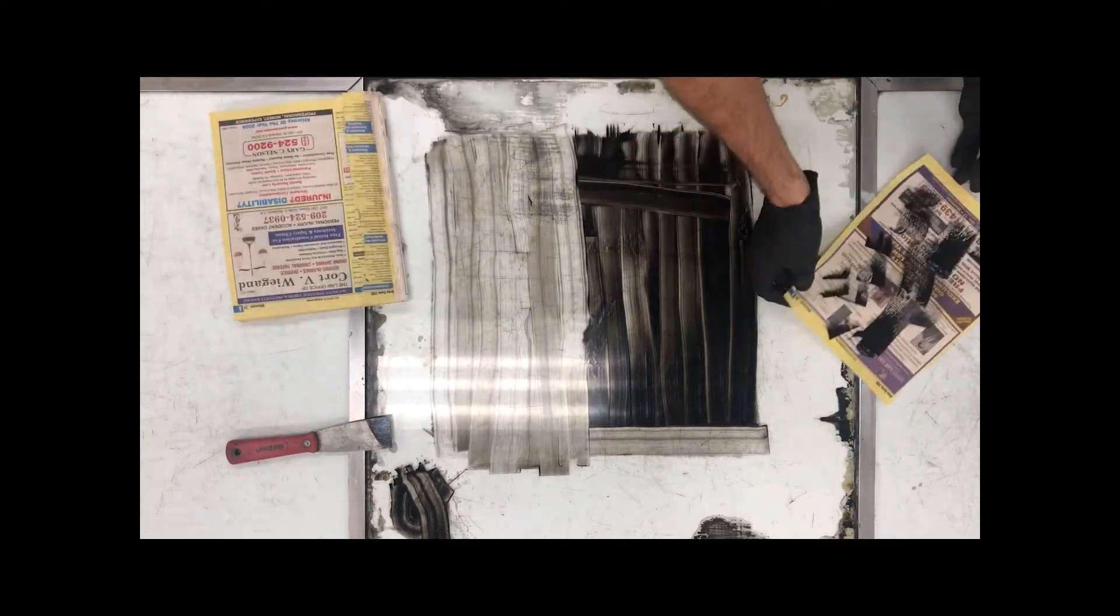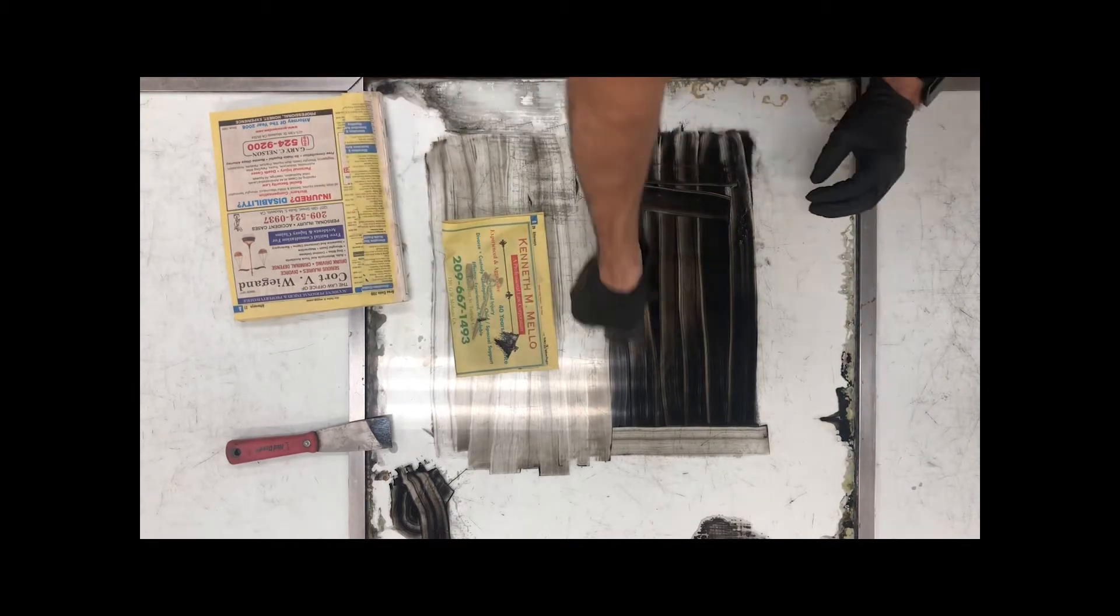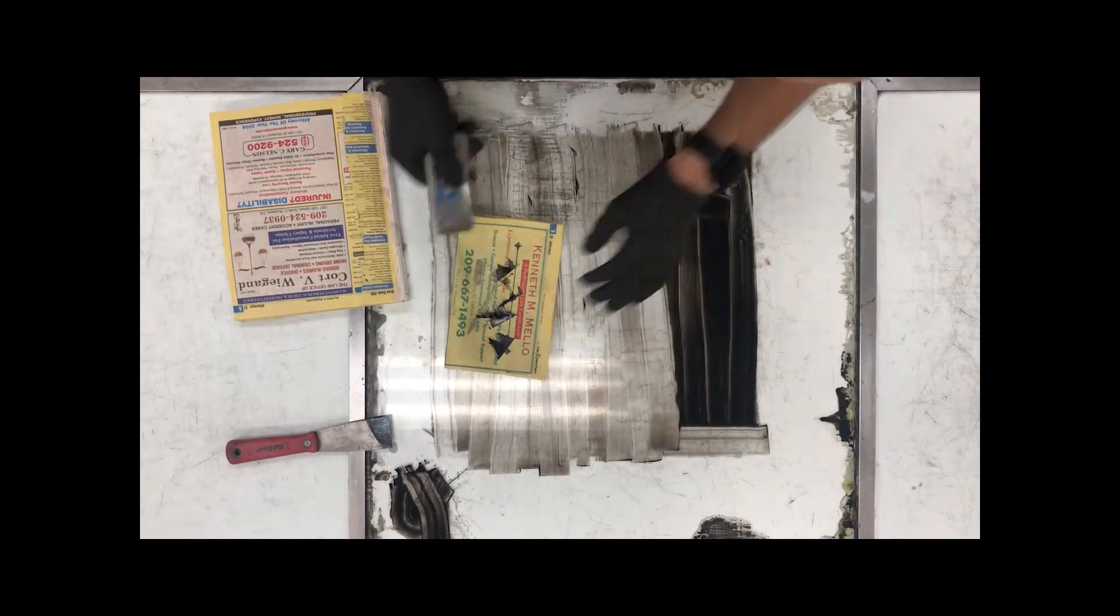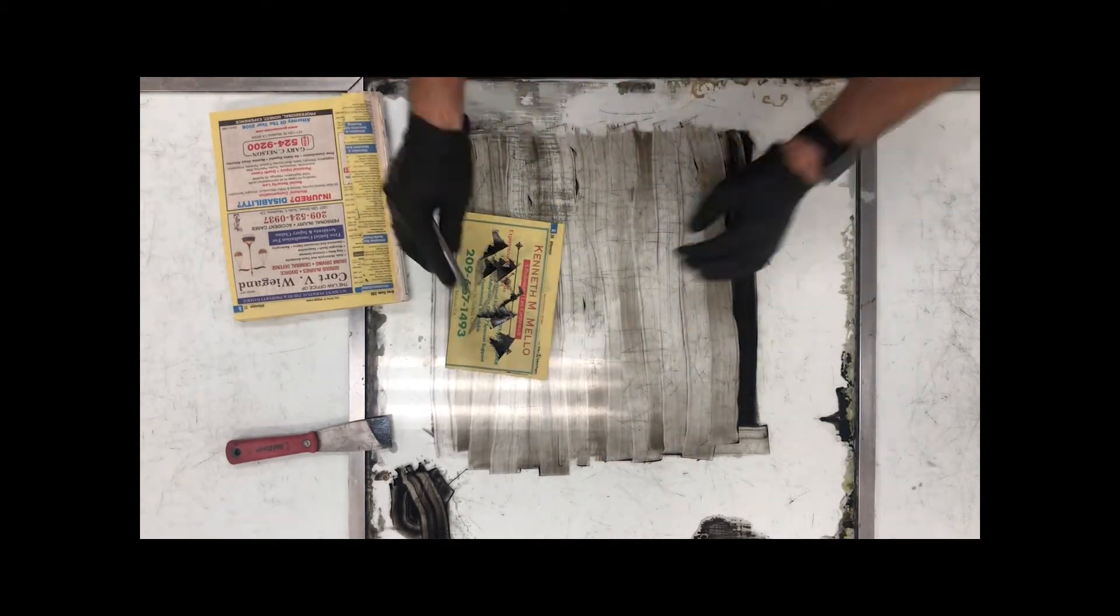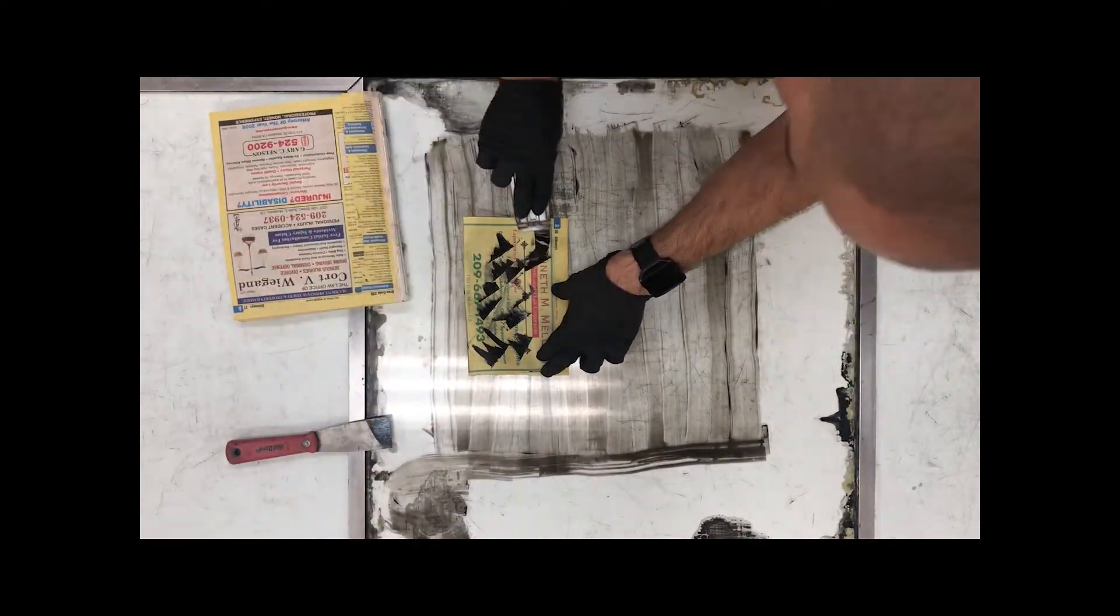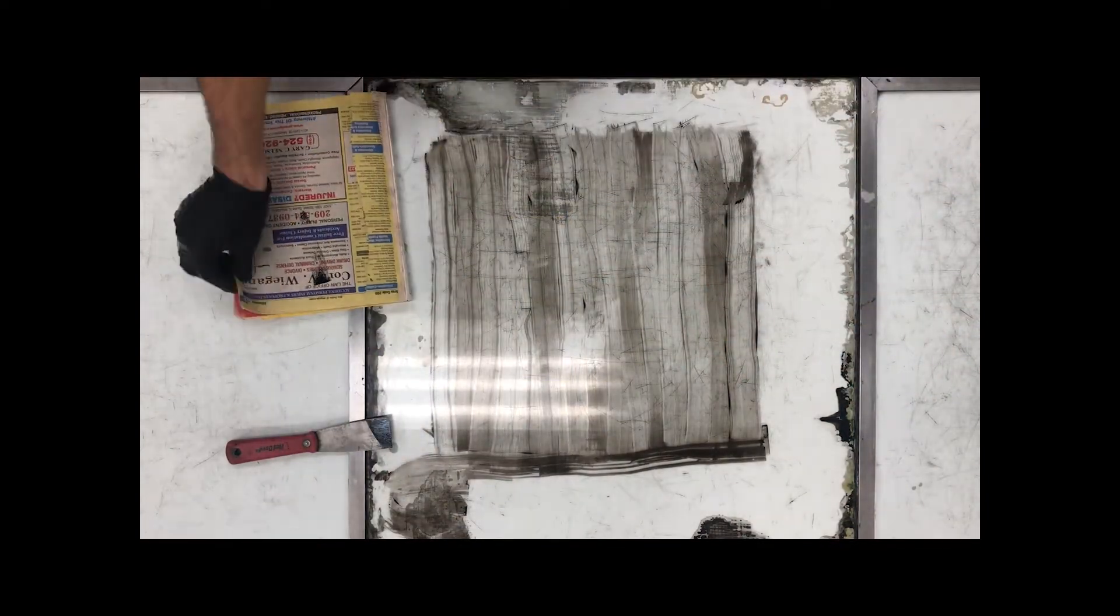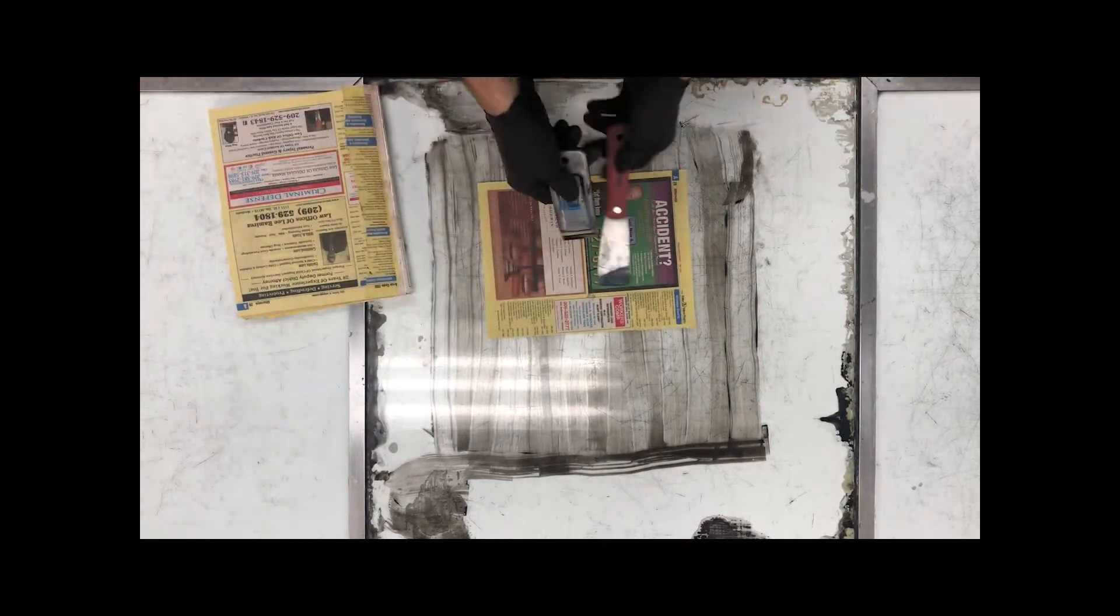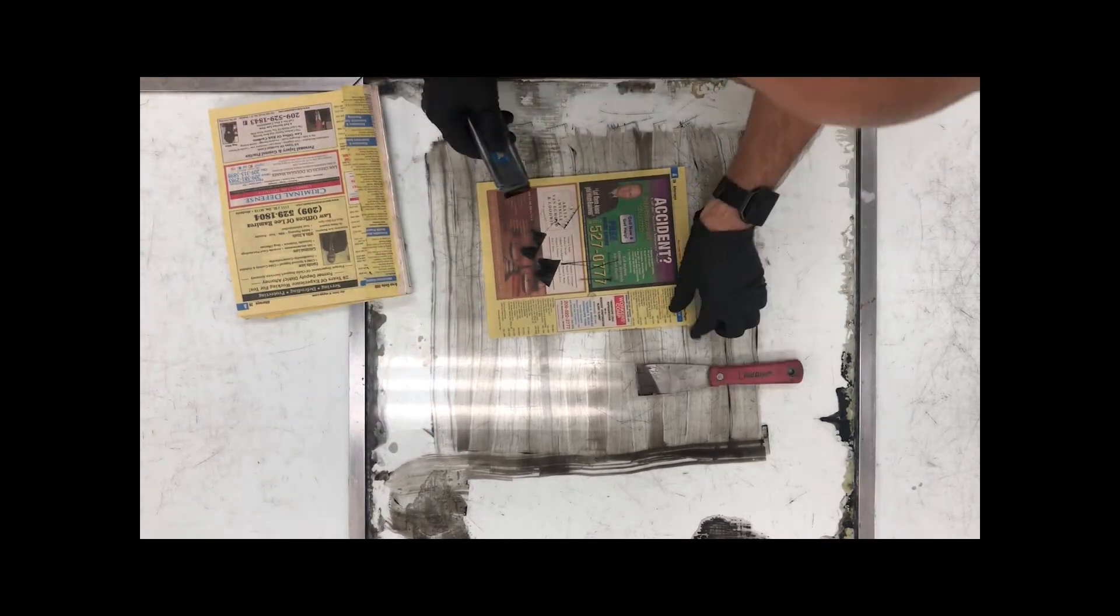As those pages get full of ink, I just fold them up and add them to the other side. Once they're so full that I can't use them anymore, I throw them away. None of the ink will ever go back into the can. Once it's out and contaminated, it doesn't go back. You can see I use the razor scraper to scrape off the palette knife as well.